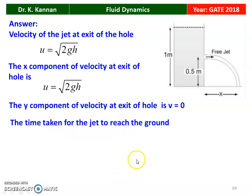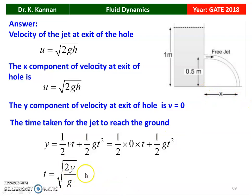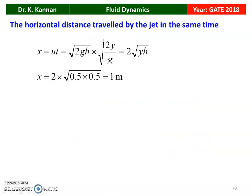Time taken for the jet to reach the ground: y = ½vt + ½gt², with v = 0, so y = ½gt², giving t = √(2y/g). The horizontal distance travelled by the jet in the same time: x = u·t = √(2gh) × √(2y/g) = 2√(yh).